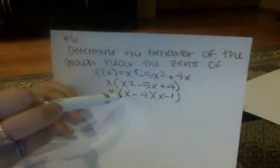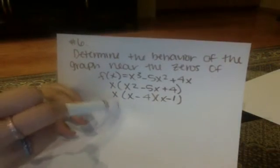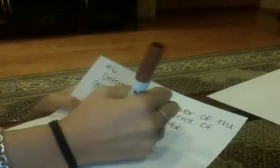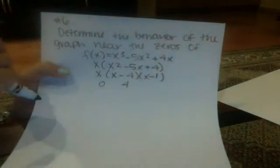So this shows you that your zeros are 0 for this x, 4 for the x - 4, and 1 for the x - 1.